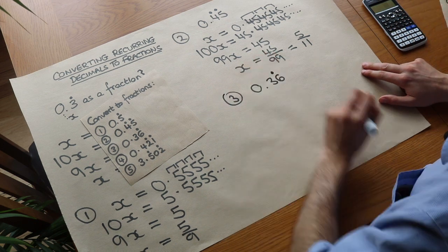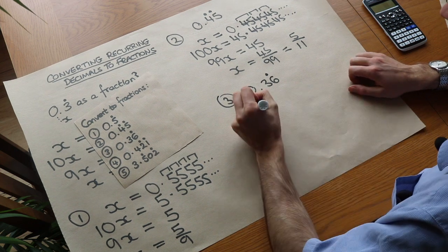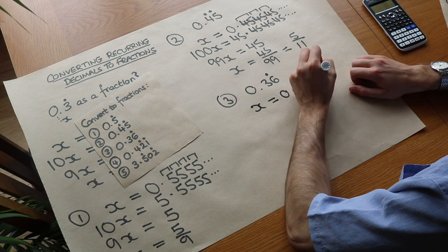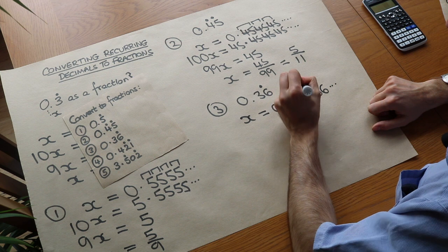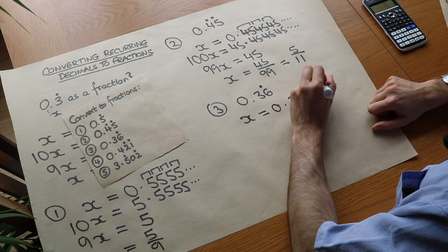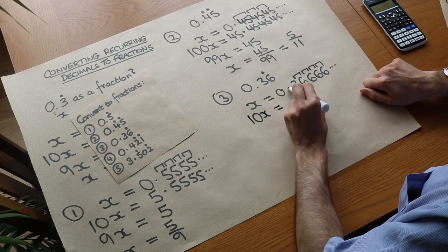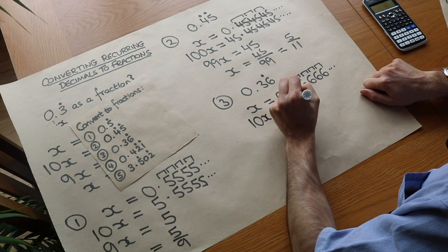0.36 recurring. Now this time the dot is only on the 6. It's only the 6 that's repeated. So x is going to be 0.3666666 etc. Now like the early examples it's only repeating every digit. So we multiply by 10. 10x is equal to move the decimal point one place. 3.666. So you put the decimal point in the same place.